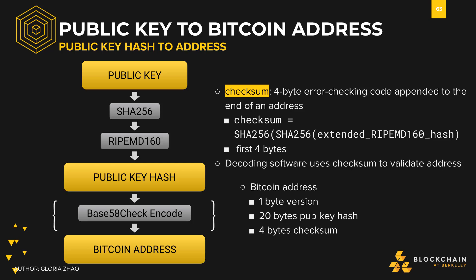After converting the result to base58, we finally have our Bitcoin address. As a recap, in our address we have successfully encoded our public key hash, which allows people to pay us; a version byte that says what network we're on; and a checksum that accounts for human error. If someone types or copies down your address wrong, the address would not be valid given that checksum.